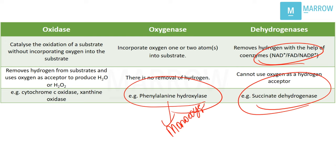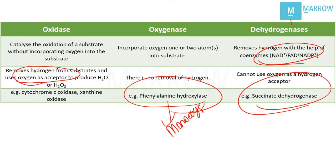Oxygenation and oxidation are different. In hemoglobin, there is oxygenation. If hemoglobin is oxidized, it will become methemoglobin. In oxidases, oxidation happens without incorporating oxygen. They remove hydrogen from the substrate and use oxygen as the acceptor. That is the difference between dehydrogenase and oxidase — both can remove hydrogen, but in oxidases, oxygen is used as the acceptor. For example, cytochrome oxidase produces water by combining hydrogen and oxygen. Xanthine oxidase produces hydrogen peroxide.